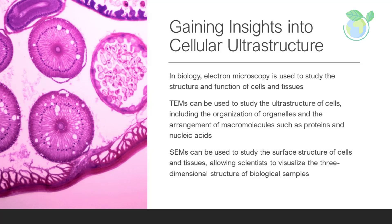Gaining insights into cellular ultrastructure: in biology, electron microscopy is used to study the structure and function of cells and tissues. TEMs can be used to study the ultrastructure of cells, including the organization of organelles and the arrangement of macromolecules such as proteins and nucleic acids. SEMs can be used to study the surface structure of cells and tissues, allowing scientists to visualize the three-dimensional structure of biological samples.